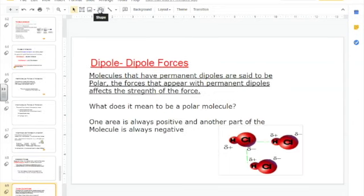Dipole-dipole forces occur when there is a permanent dipole, or a permanent positive and negative end. This is said to be polar, which means the two ends are positive and negative. The forces that appear with permanent dipoles affect the strength of the force.